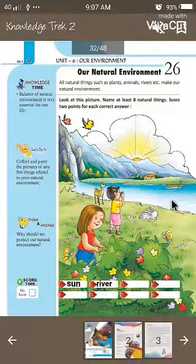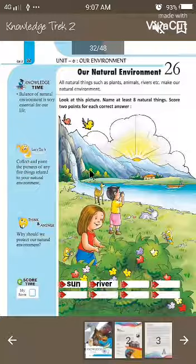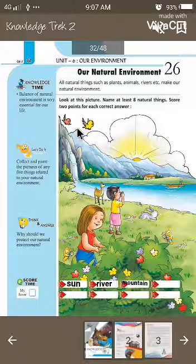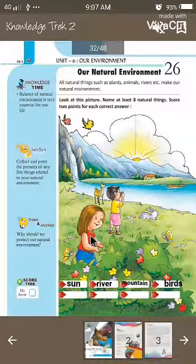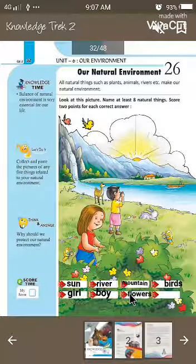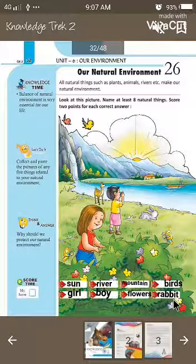Next is a river, so we can write the spelling of river here. The third picture is mountain, so we can write the spelling of mountain. We can see birds in this picture, so we can write the spelling of bird. We see a girl, so we can write the spelling of girl here. We can see a boy, so we can write the spelling of boy here. We can see a rabbit, so we can write the spelling of rabbit here.